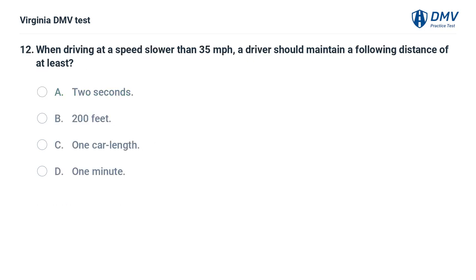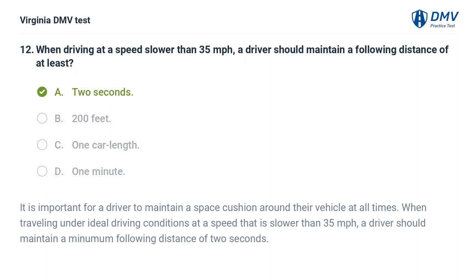When driving at a speed slower than 35 miles per hour, a driver should maintain a following distance of at least 2 seconds. It is important for a driver to maintain a space cushion around their vehicle at all times. When traveling under ideal driving conditions at a speed slower than 35 miles per hour, a driver should maintain a minimum following distance of 2 seconds.